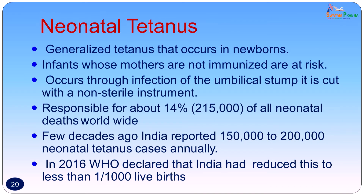Neonatal tetanus presents as generalized tetanus in newborns. Infants whose mothers are not immunized are at risk. It occurs through infection of the umbilical stump — cut with a non-sterile instrument or because of the practice of applying cow dung onto the stump. It was responsible for about 14 percent of all neonatal deaths worldwide. India reported 1.5 to 2 lakh neonatal tetanus cases annually a few decades ago, but in 2016 the WHO declared that India had reduced this incidence to less than 1 per 1000 live births — a big achievement.